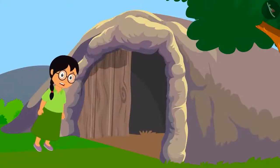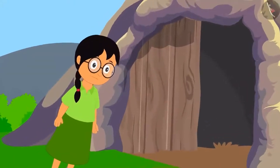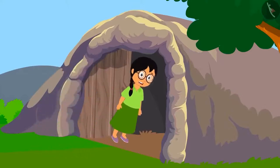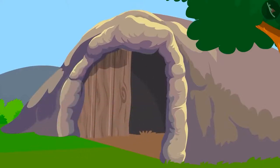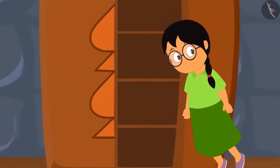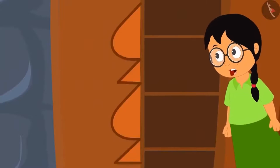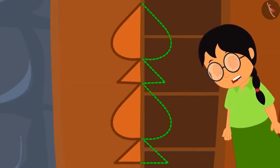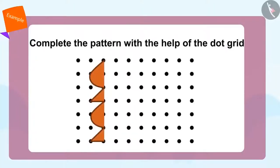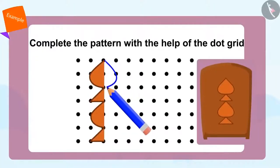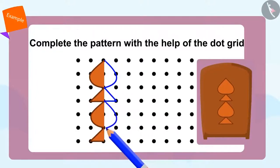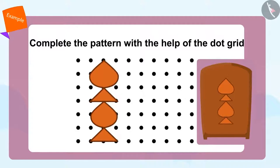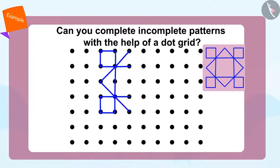Meenu was always afraid to go to Shere Khan's house, but now she thinks Shere Khan will not be able to see her. She decides to go and sees a pattern on the door of his closet. She thinks about how she can complete the second part of this pattern using the dot grid. In this way we can complete the second part of this pattern. Can you complete the second part of this pattern?